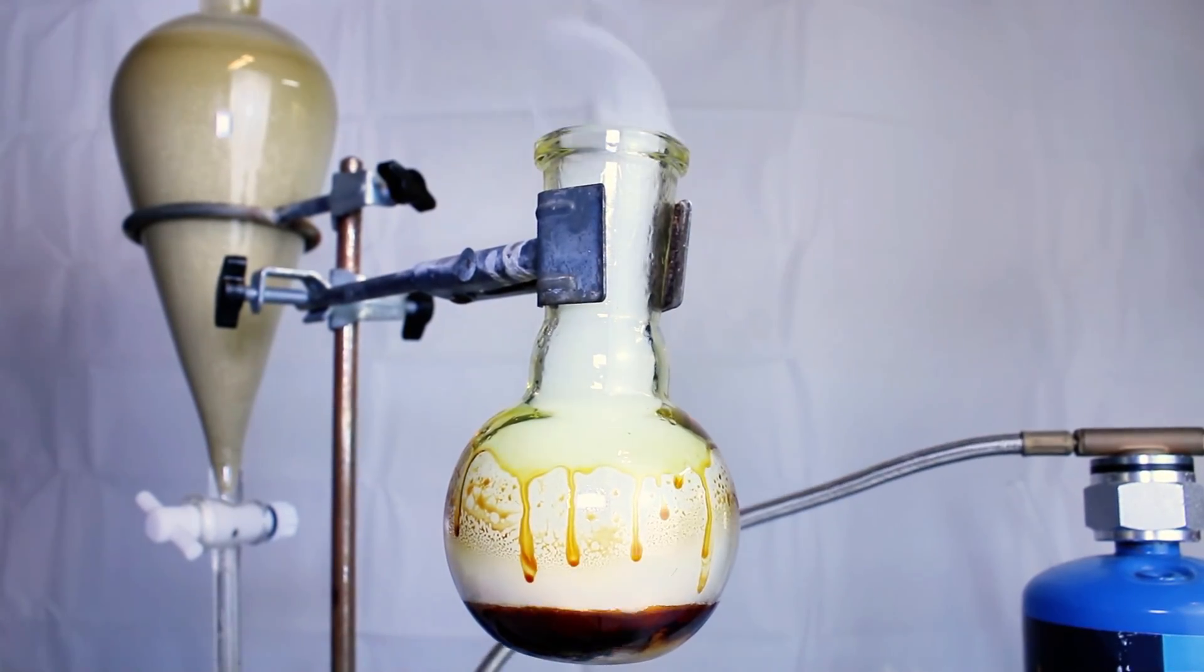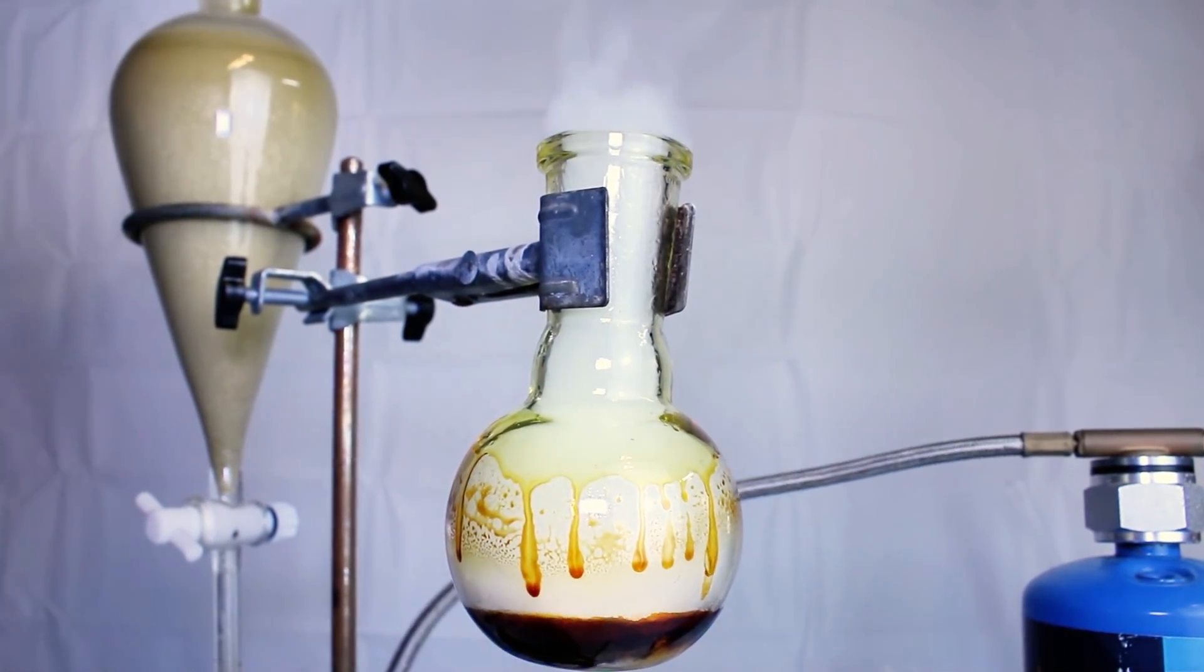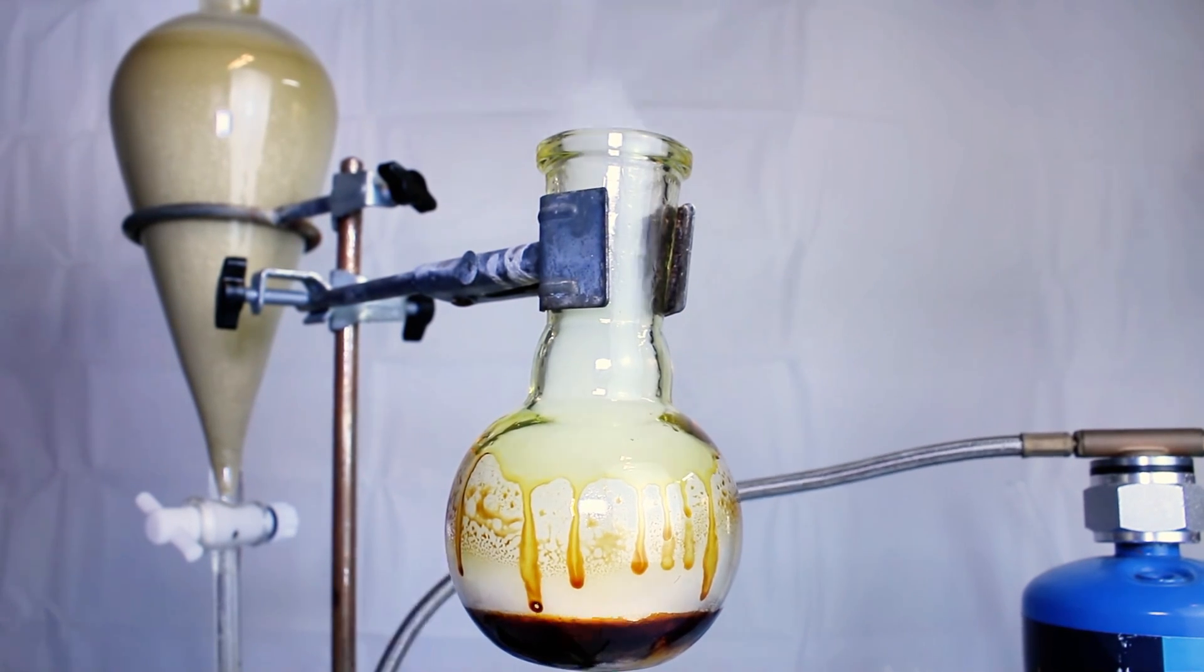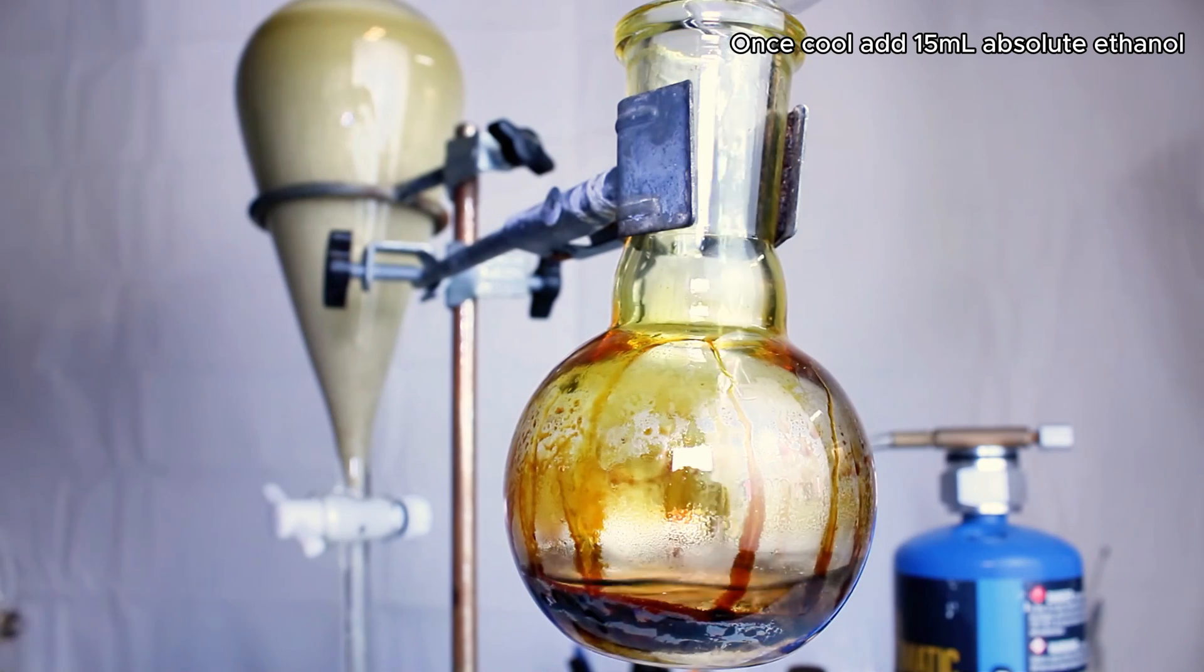The flask is carefully heated until the mixture at the bottom is a dark amber color, but not quite black. At that point the heat is cut, and I allow this to cool completely before adding about 15ml of absolute ethanol.